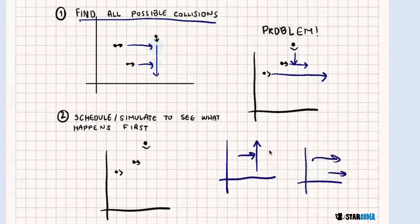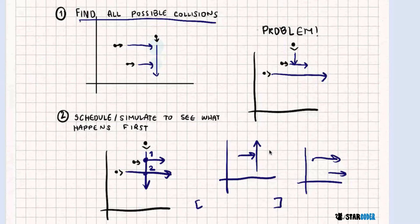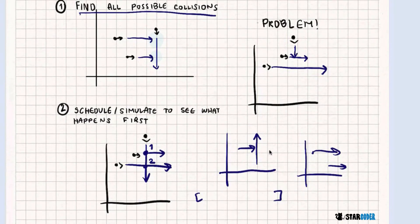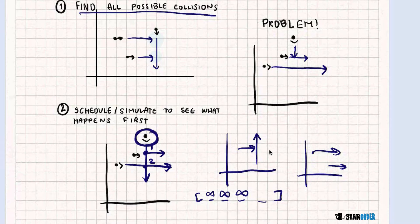So we're going to find all possible collisions and then simulate. We have all of these possible collisions — this one occurs at time one, this one at time two. We're going to keep a list that contains the time that each cow stops. For every cow, we're going to have a time, and at first these times are just going to be infinity. Then we're going to look at the first collision: the north cow is going to stop, so we replace this north cow with time one because it collides at time one.